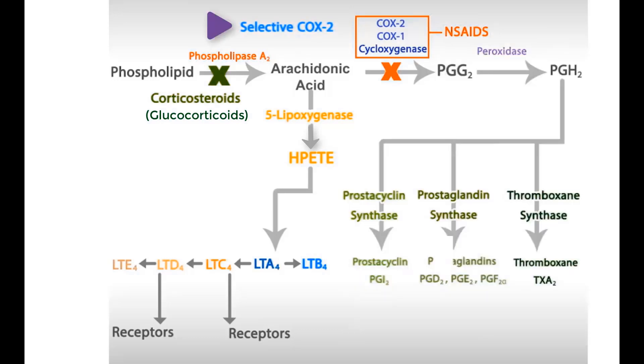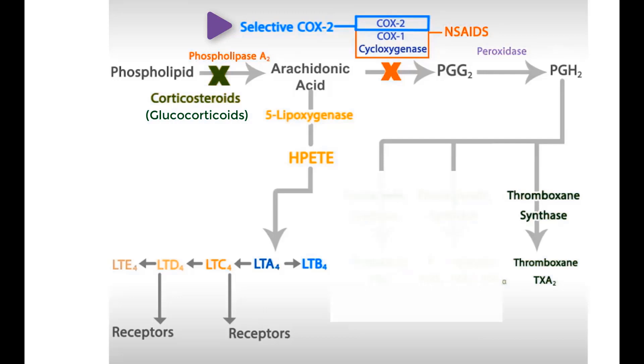The relatively new selective COX-2 inhibitors have no effect on COX-1. Therefore, they don't interfere with thromboxane production.